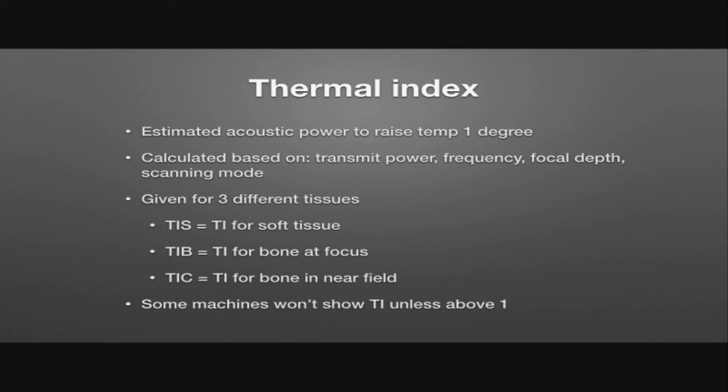Depending on what type of imaging you're doing, the machine will show a different thermal index score. For fetal imaging, it matters whether you're doing soft tissue imaging, looking at the femur, or cranial imaging. For echocardiography, we're typically looking at TIS — soft tissue thermal index. Some machines won't show the thermal index unless it's above 1, indicating you're in danger territory, but some show it all the time. The value to watch for is greater than 1.5.